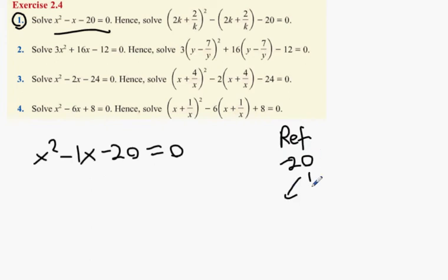I then come up with two numbers that will multiply by each other to give you minus 20, but yet when you add them they'll give you minus 1. Any suggestions? Minus 5 and plus 4.